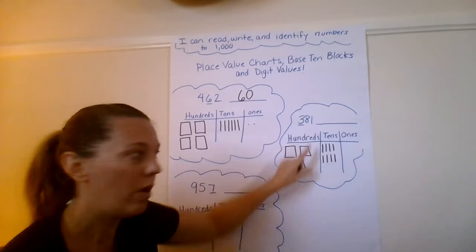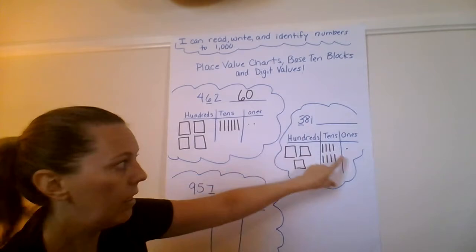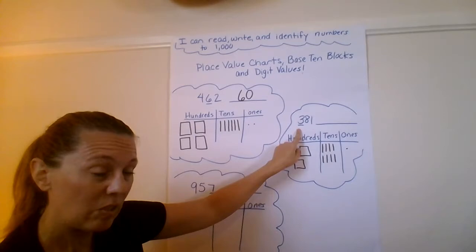How many ones units am I representing? Just one. One little dot. One, two, three hundred. 10, 20, 30, 40, 50, 60, 70, 80. One. 381.